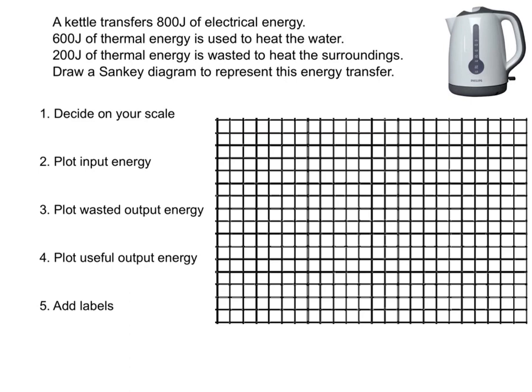Now step one of drawing your Sankey diagram is you've got to decide on your scale. I've got 800 joules of electrical energy as my input energy here, so I'm going to use one square to represent 100 joules. So one square equals 100 joules. That's the scale I'm going to use throughout this Sankey diagram.